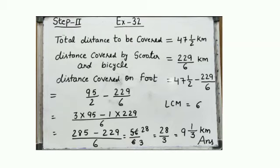When you solve it, the answer comes to 28/3. It is an improper fraction, so we will convert it into a mixed numeral. The answer is 9 1/3 km.